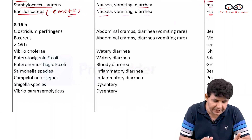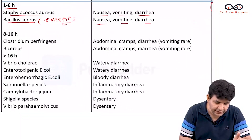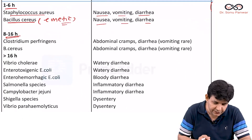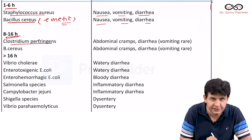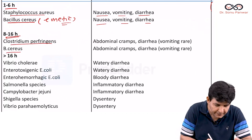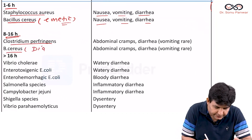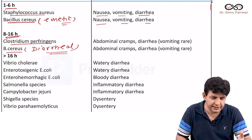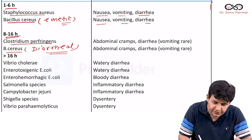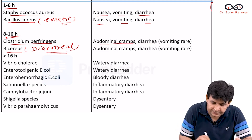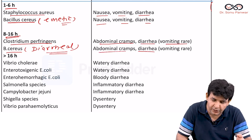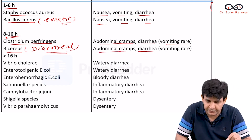Now coming to the 8 to 16 hour category. The organisms here are Clostridium perfringens, also termed as Welchii, and Bacillus cereus diarrheal type. These associate with abdominal cramps and diarrhea. Vomiting can also happen but is rare.